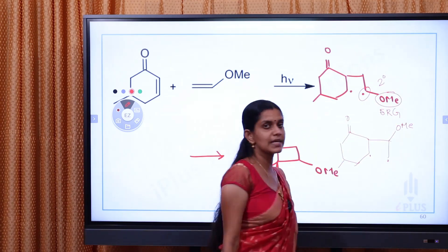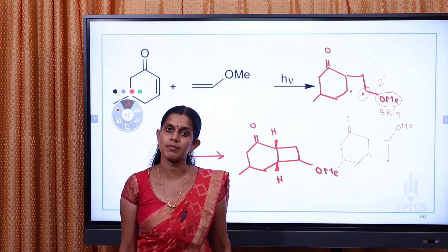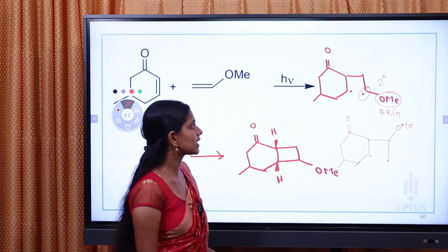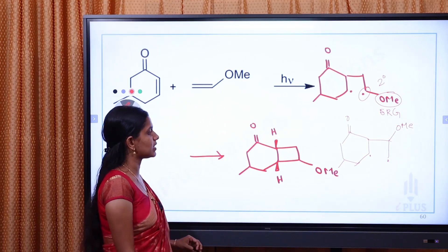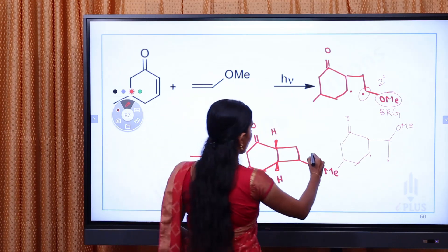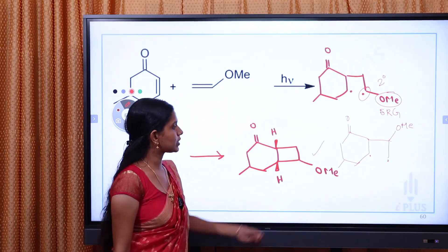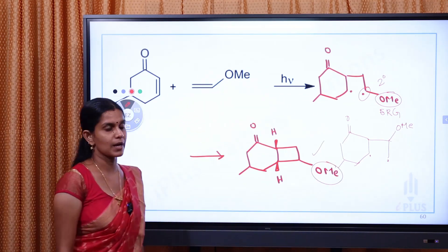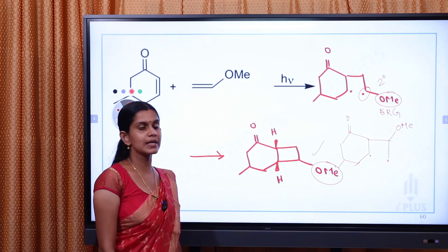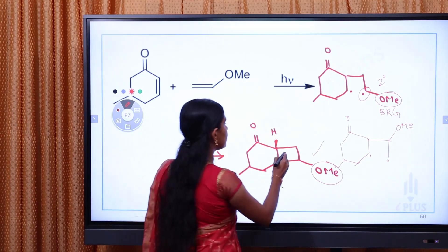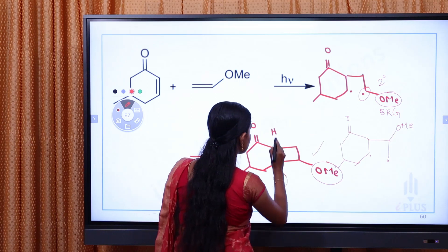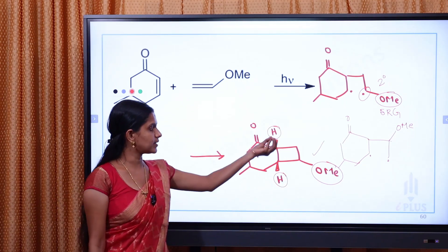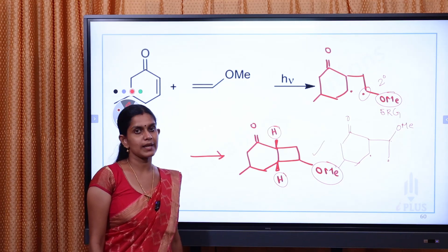This is an electron releasing group. This is the stability window. When you have stable free radicals, there is an arrangement of stable free radicals. What is the product? The product is OME. This is the product. This is a cis-fused ring. The symbol rings are fused. It is a cis-fused ring.